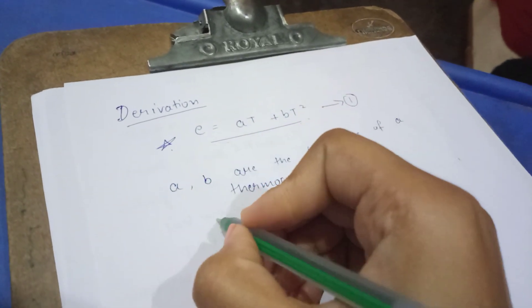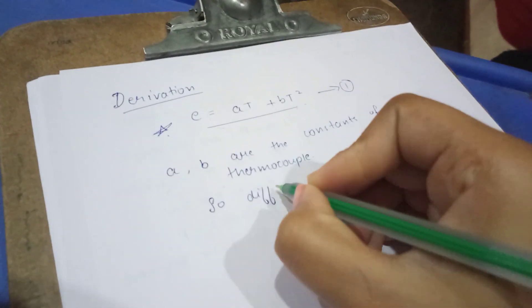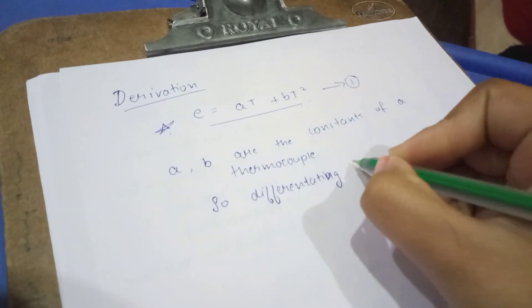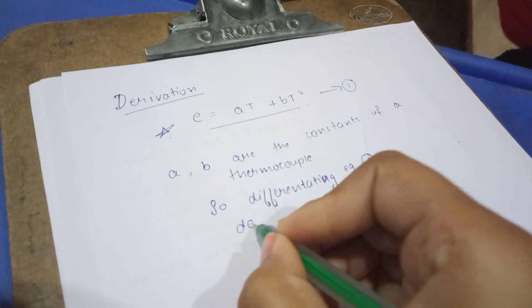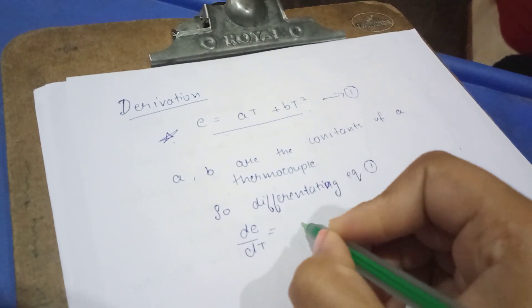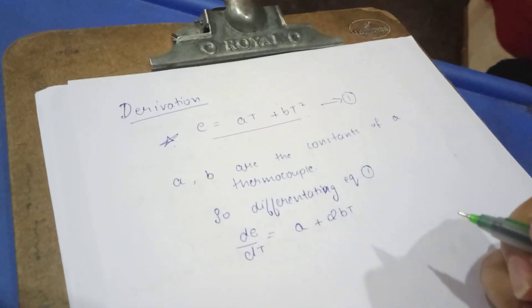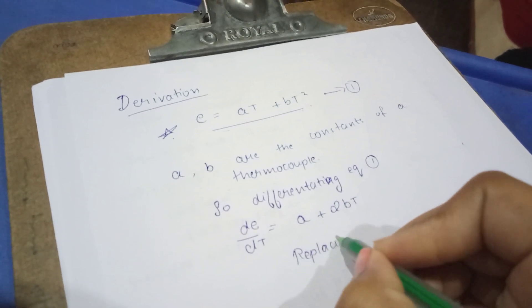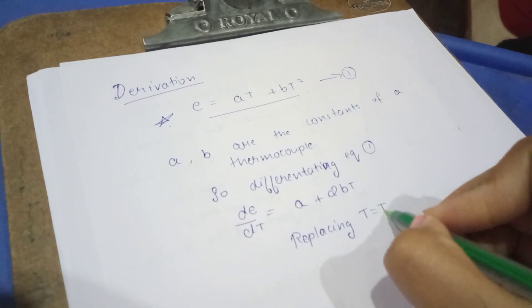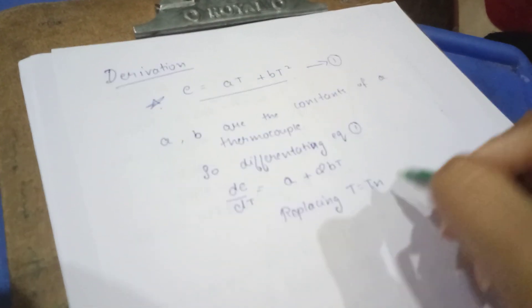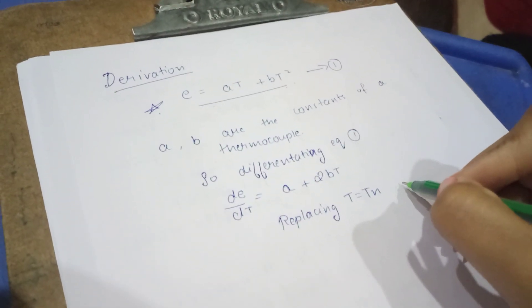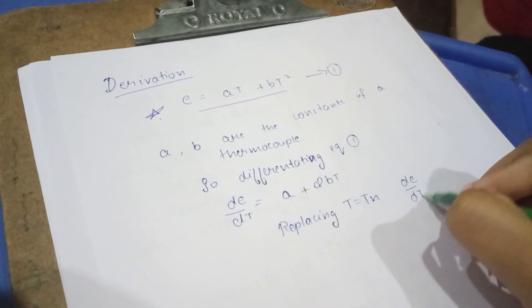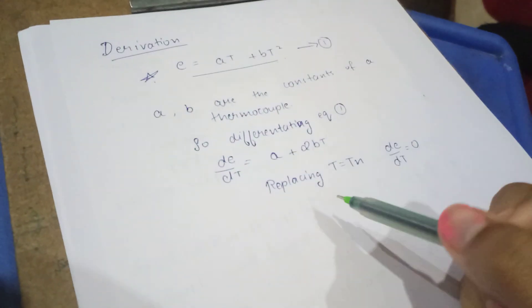Next, differentiating equation one: dE/dT = a + 2bT. Now replace T with T-N, and since E is maximum at T-N, dE/dT is equal to zero.